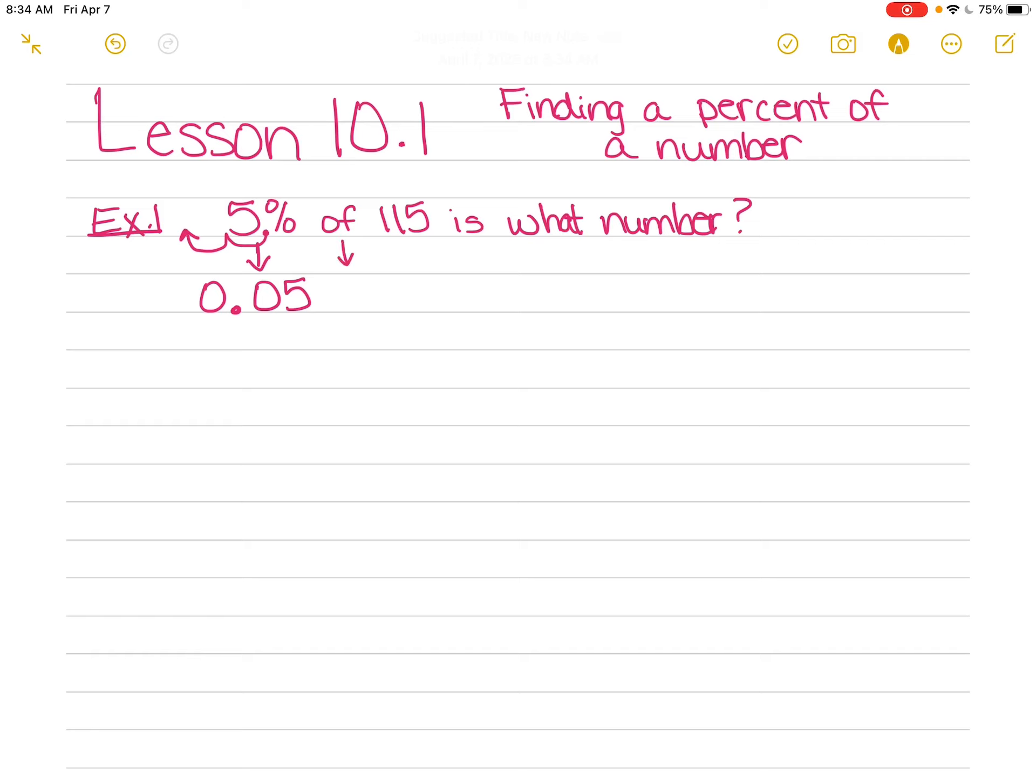Of is almost always times in math. Not always, but in this case it is. So 0.05 times 115 is, we know that is means equals. And what number means that I don't know. So that means it's my variable, x.